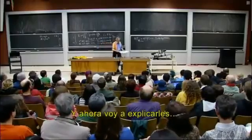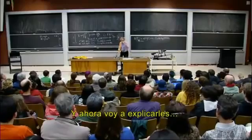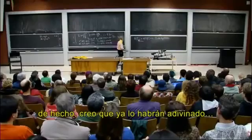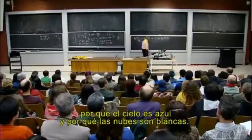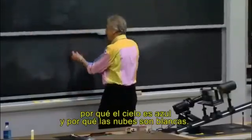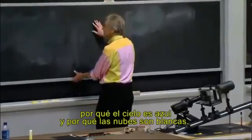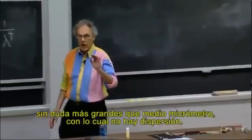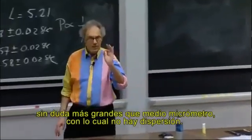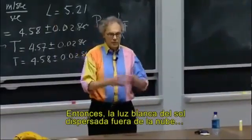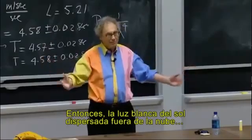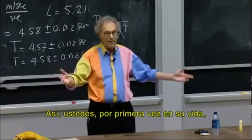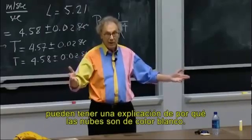I'm now going to explain why the sky is blue and why clouds are white. Clouds consist of very small water drops, surely larger than half a micron — which is Mie scattering. So the white light of the sun scattered off the cloud, white remains white. So you now, for the first time in your life, may have an explanation for why clouds are white.